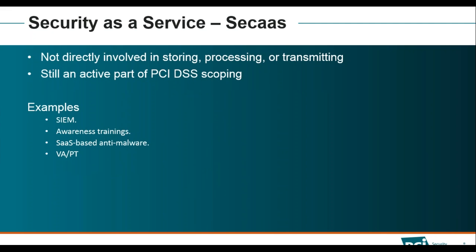There is a huge misconception about security as a service. Many people think only those providers who are storing, processing, or transmitting card data are in scope — but that is not the only case. Any service you buy that directly or indirectly affects the security of your card data environment — SIM services, awareness training, SaaS-based anti-malware, VAPT — all become part of your PCI DSS scope.